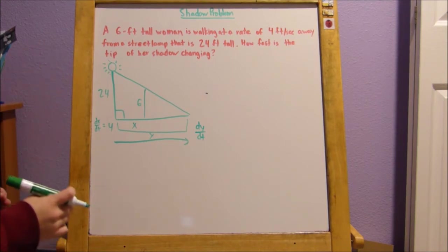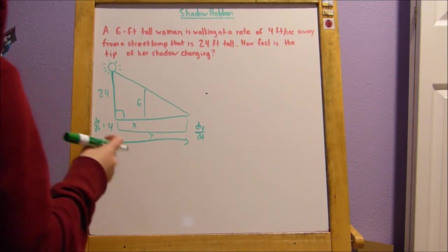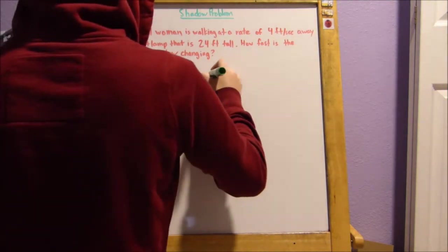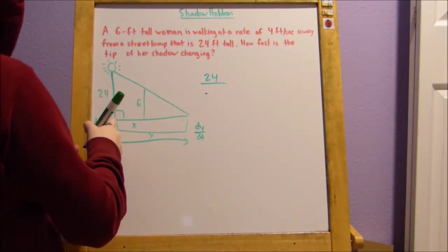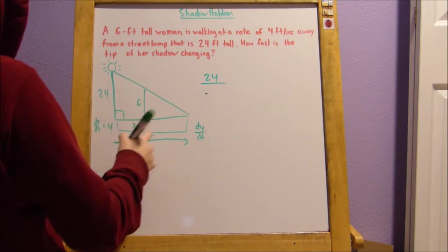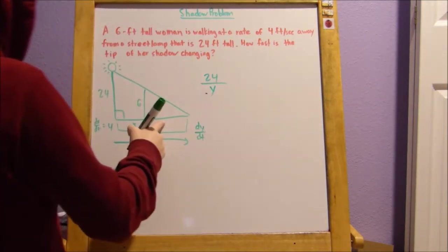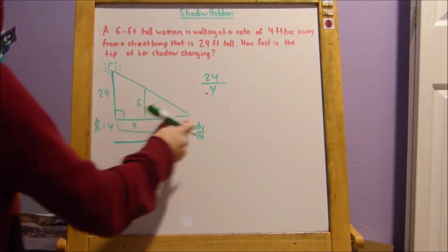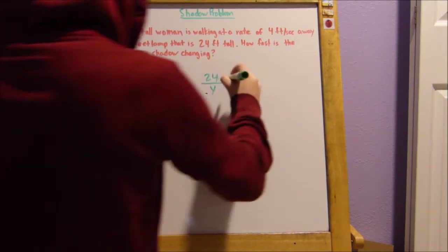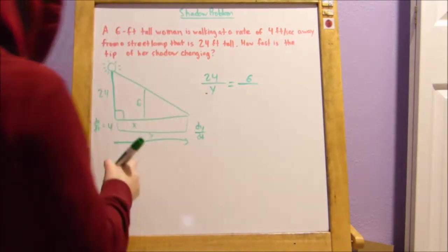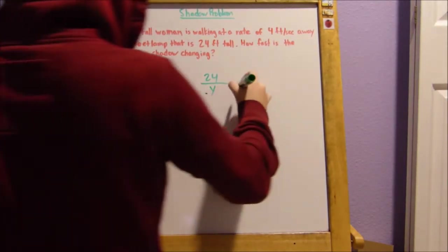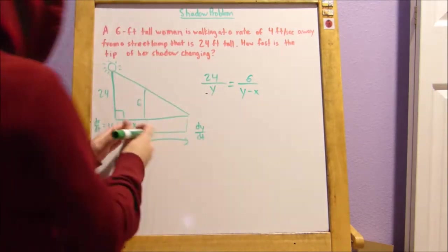So, like before, let's set up a similar triangle ratio. So, 24 over y, in this case, since we're just going to use y instead of x plus y because this y is the entire side length, equals 6 over y minus x, right? Since this is the entire length, we want to just subtract this part to get this part here.